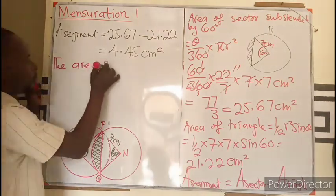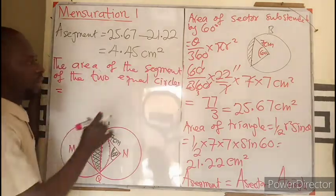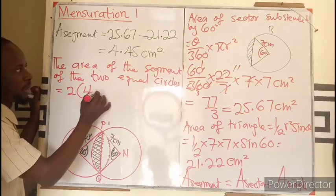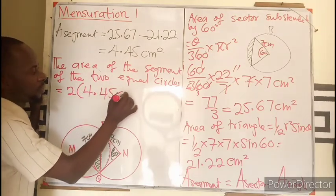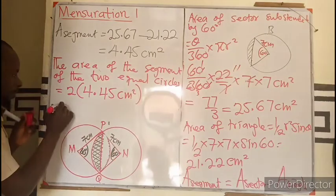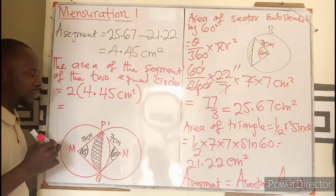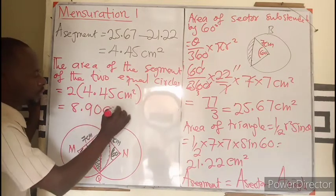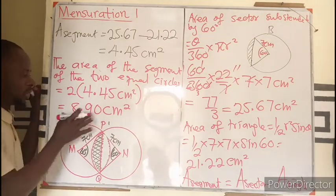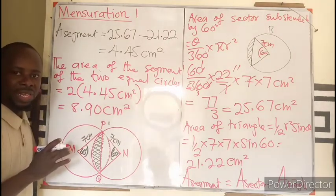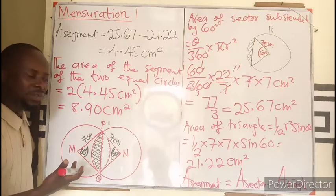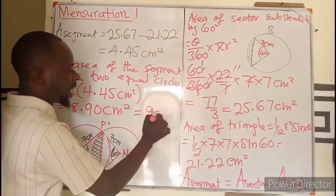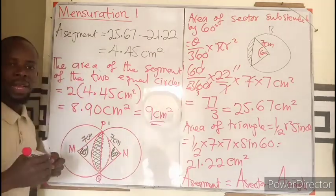The area of the segment of the two equal circles is going to be 2 times 4.47 cm², and that will give us 8.94 cm². The question demands for the answer to be in the nearest whole number, so our answer will be 9 cm².